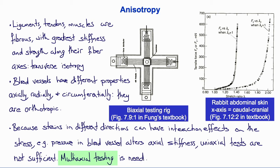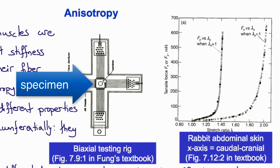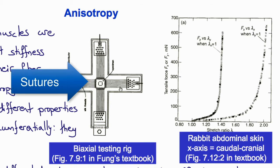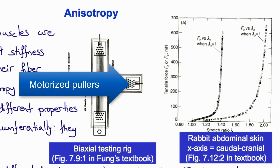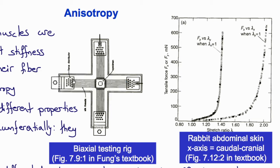A variety of multi-axial test apparatus have been developed, but one of the best known and most versatile is the biaxial test rig. The specimen is attached to long strings connected to pullers. By having these strings be long, as the device stretches the tissue, the angle of the strings doesn't change very much, so the loads remain perpendicular to the edges of the tissue. There are pullers on both sides so the device can pull the tissue symmetrically and leave the center of the specimen centered.